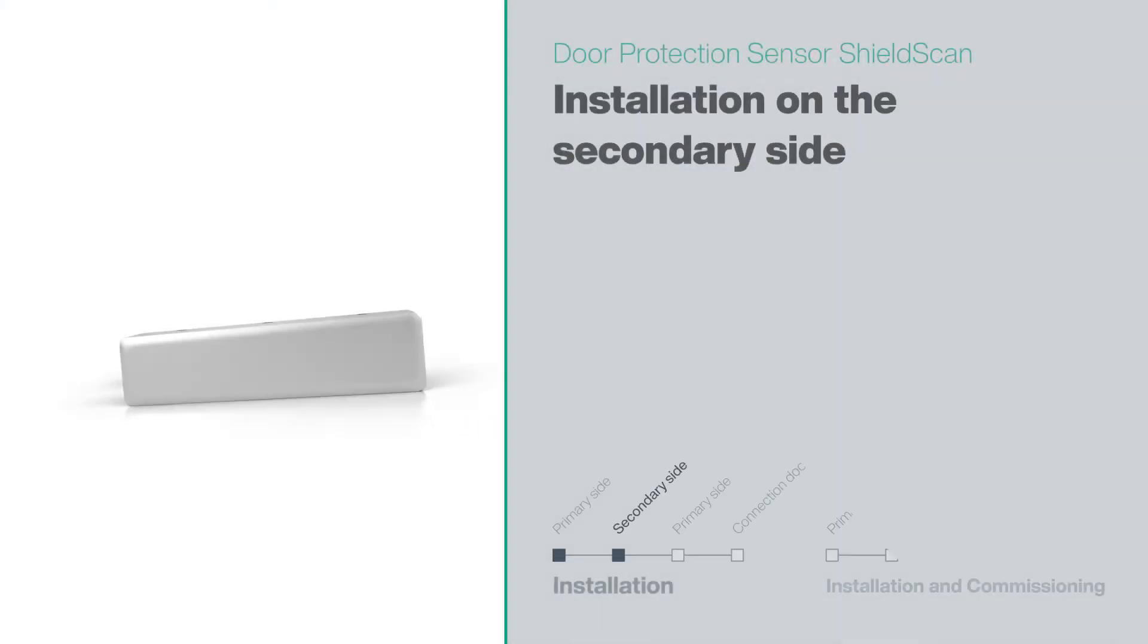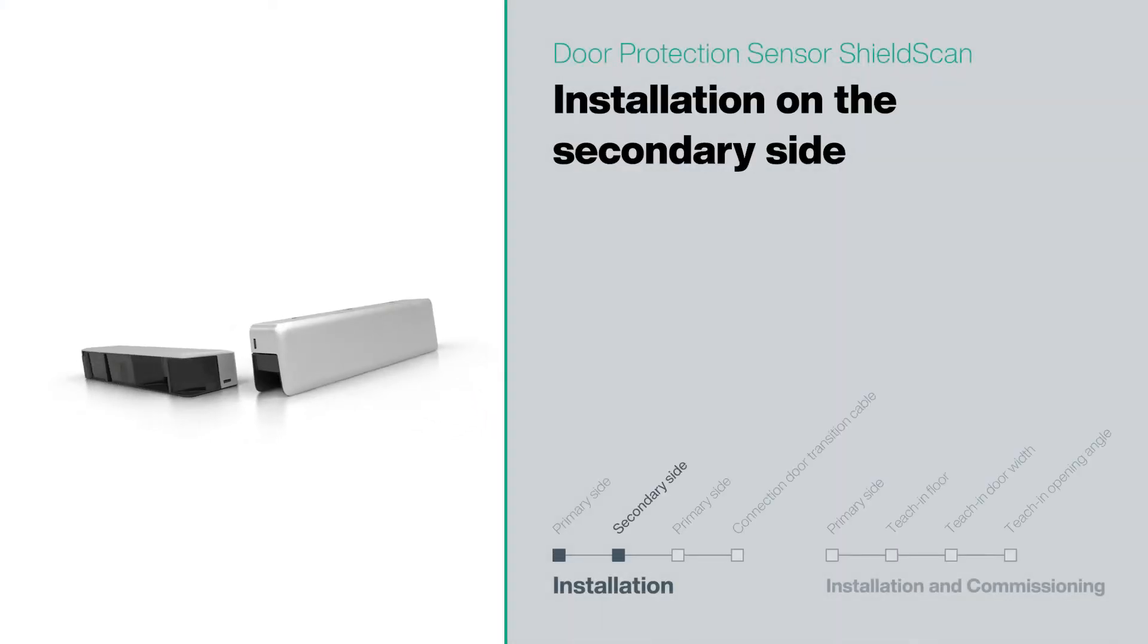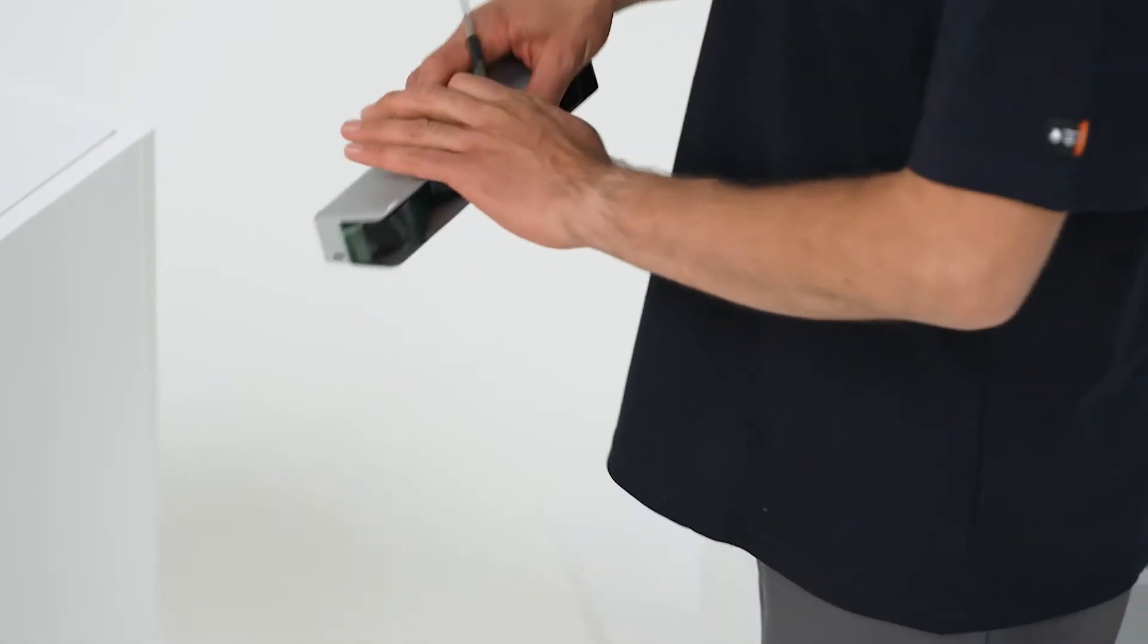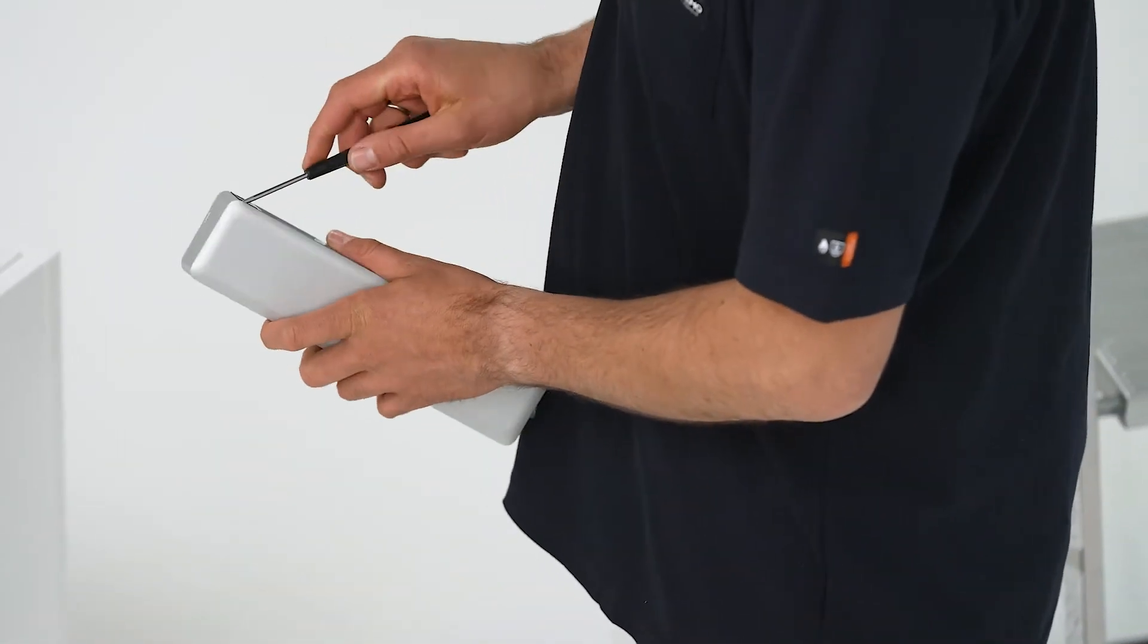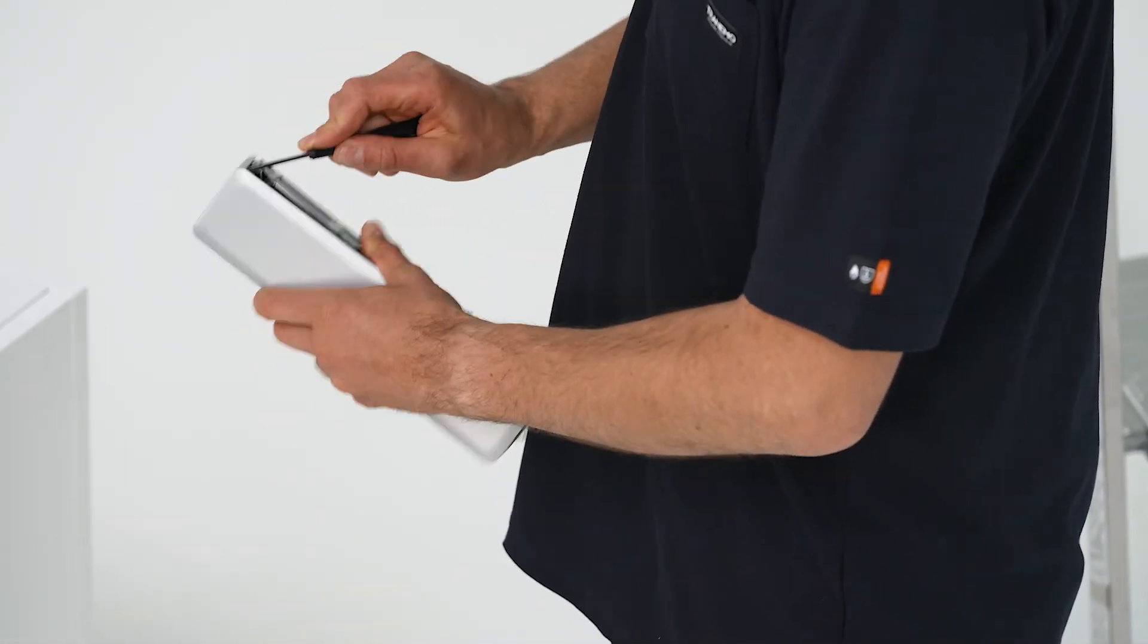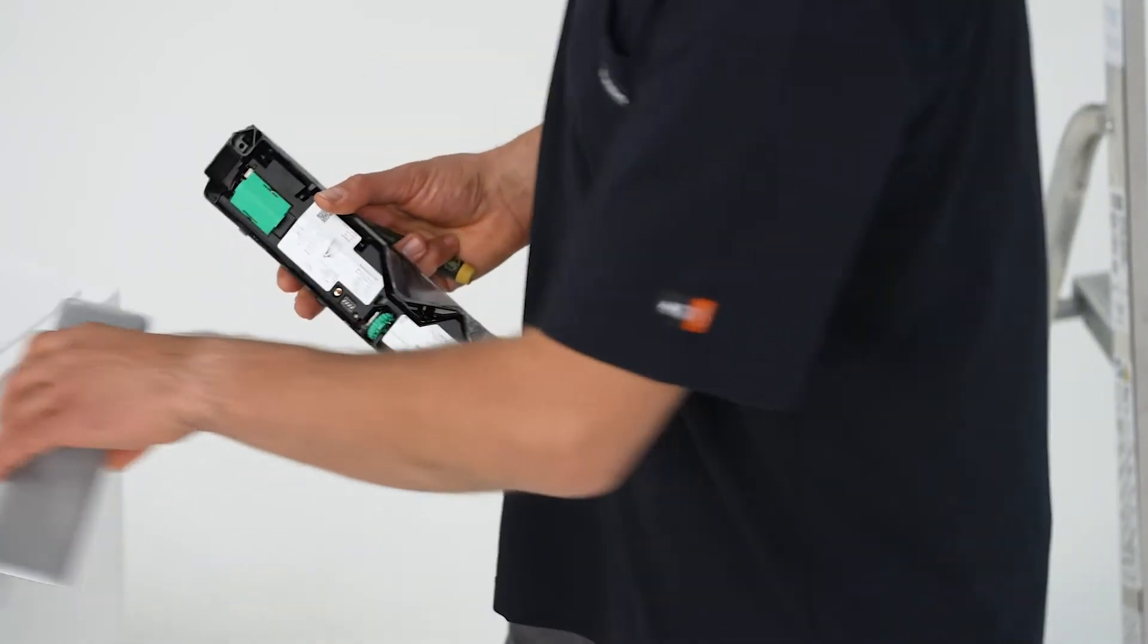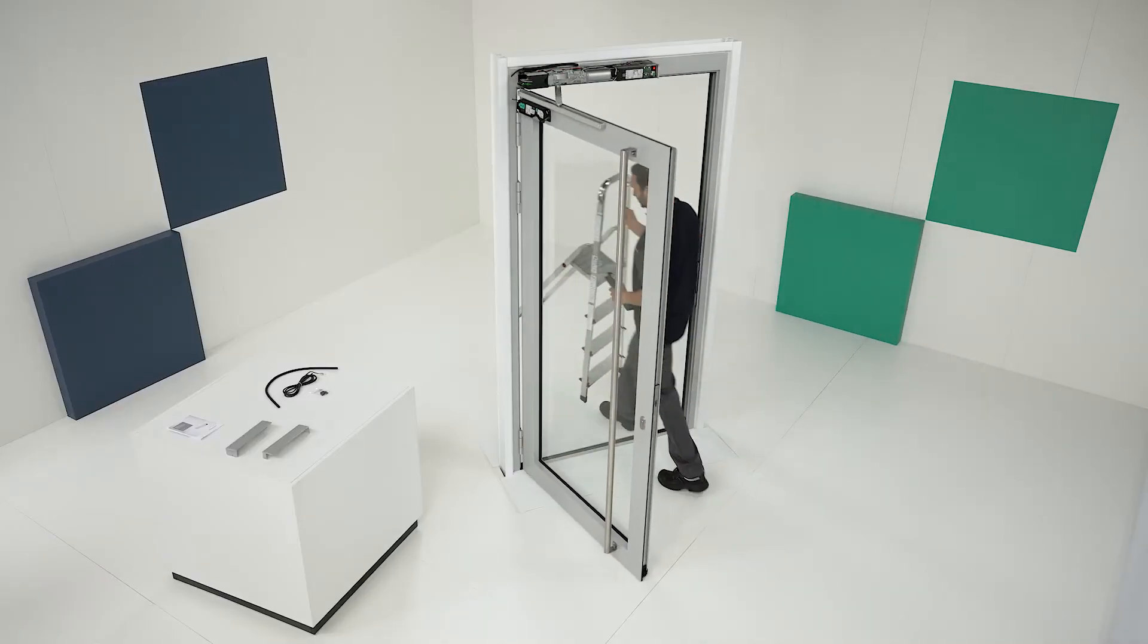The next step is to install the secondary sensor on the opposite side of the doors. To do this, follow the same procedure as for the primary module. Open the cover by inserting a screwdriver into the marked opening and pushing the side wall of the cover outward until the rear catch is released and the inside of the primary module becomes visible. Now it's time to move on to the secondary side.